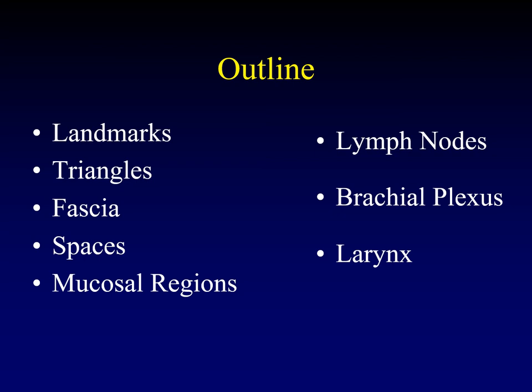We're going to start with a discussion of the landmarks that you can use to orient yourself when you're looking at cross-sectional imaging of the neck. Then we're going to talk about the triangles of the neck that are defined by the major muscles of the neck and used clinically to identify the locations of lesions. We'll also discuss the anatomic fascia that divides the neck and the spaces defined by these fascial layers, as well as the different mucosal regions and the names applied to them.